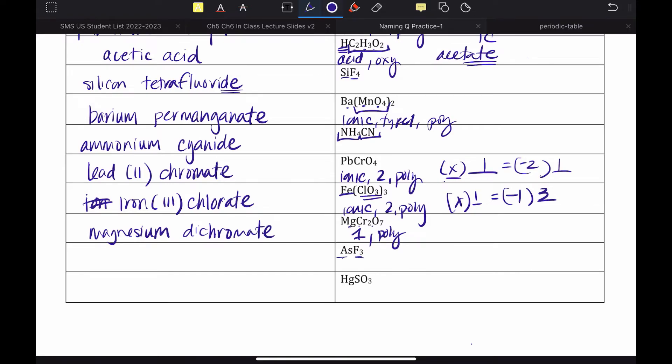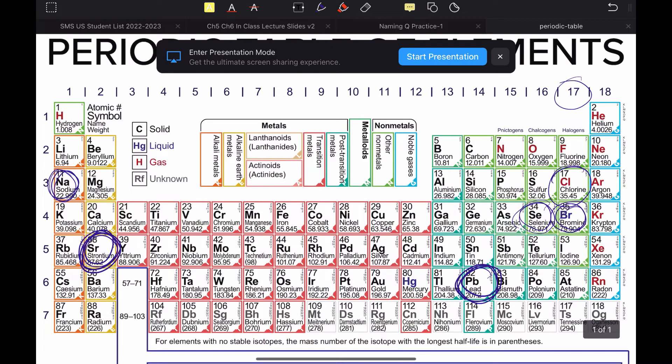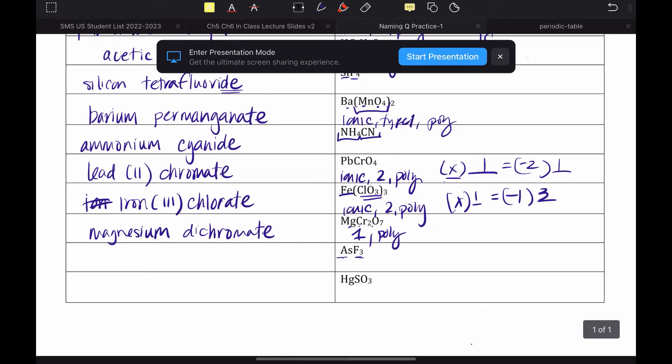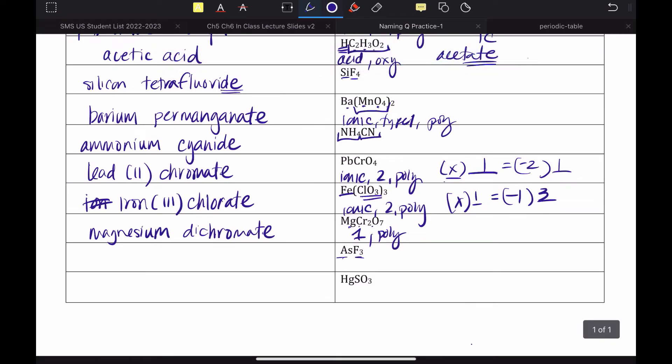Next up, AsF3. We'd go look at our periodic table and find arsenic and be like, arsenic is a non-metal. So, we'll just name it as a molecular compound. So, arsenic. Three is trifluoride.